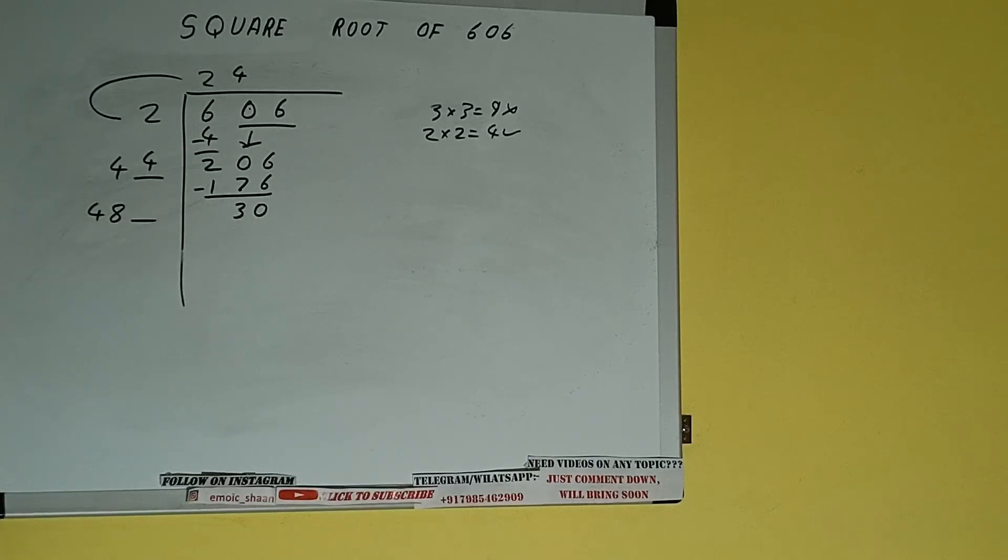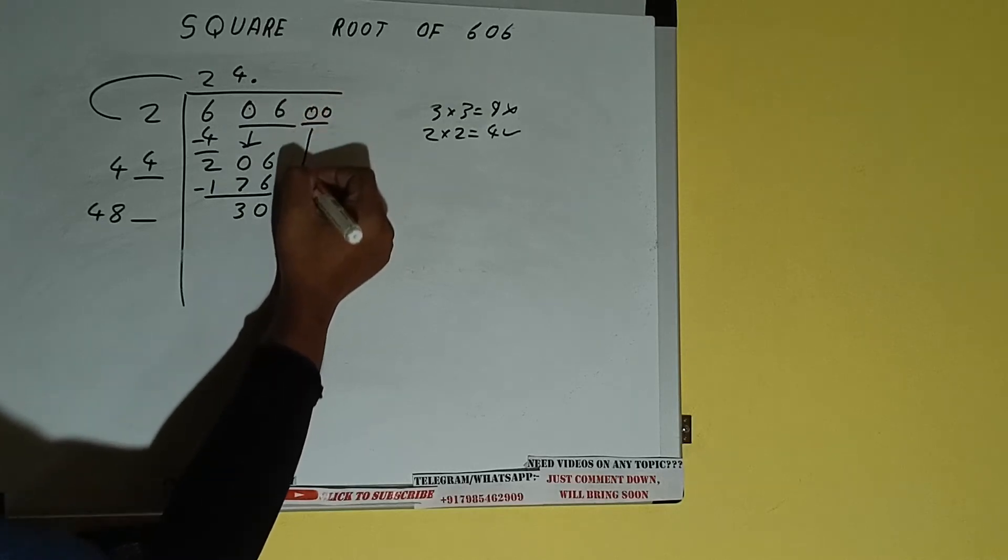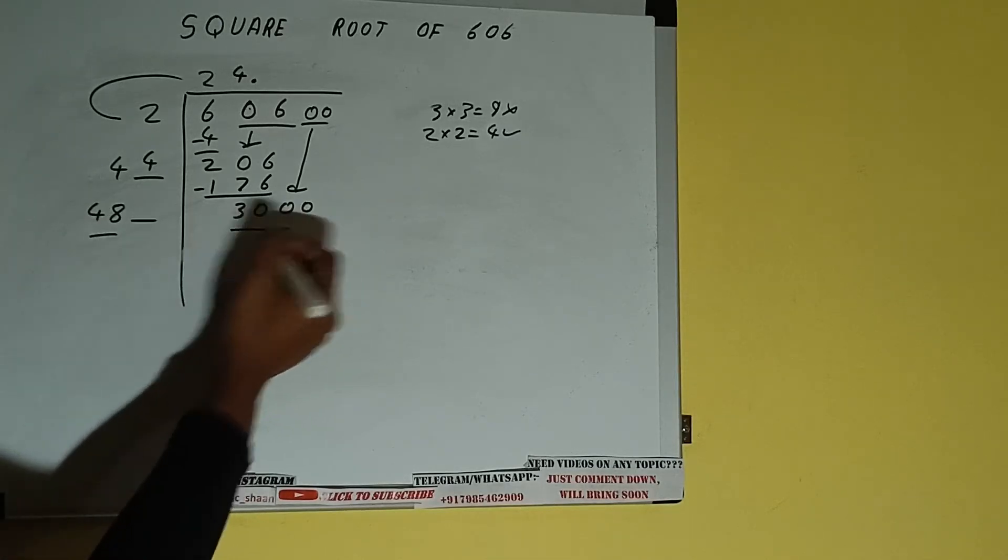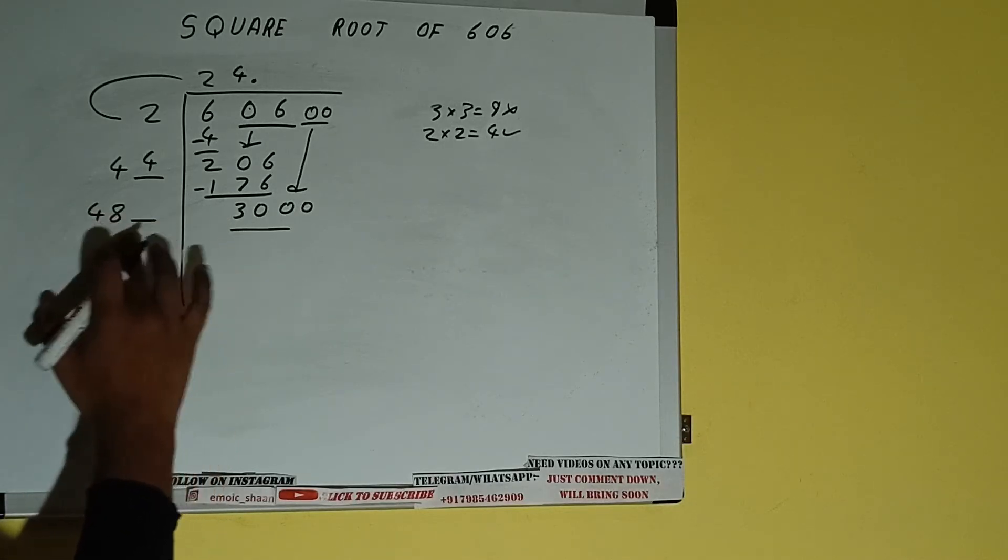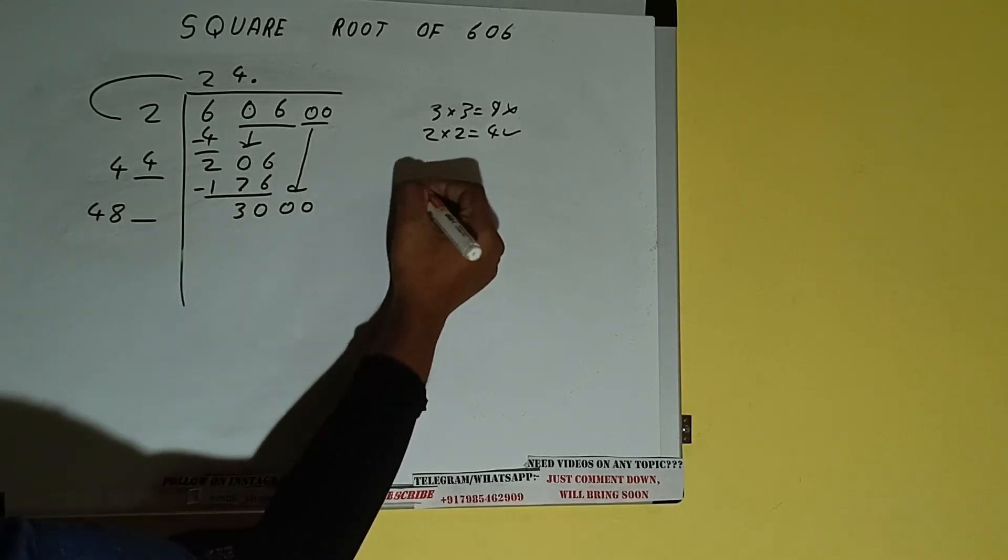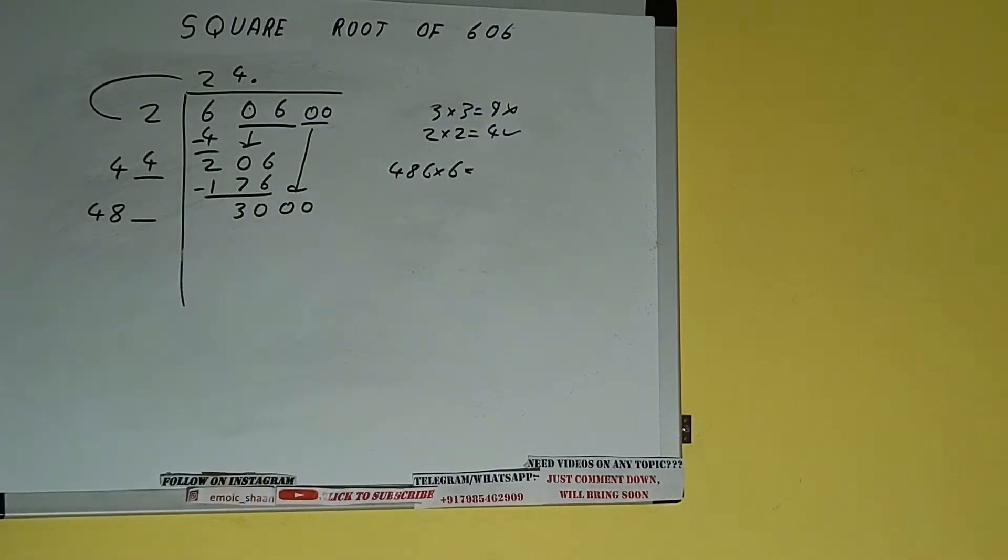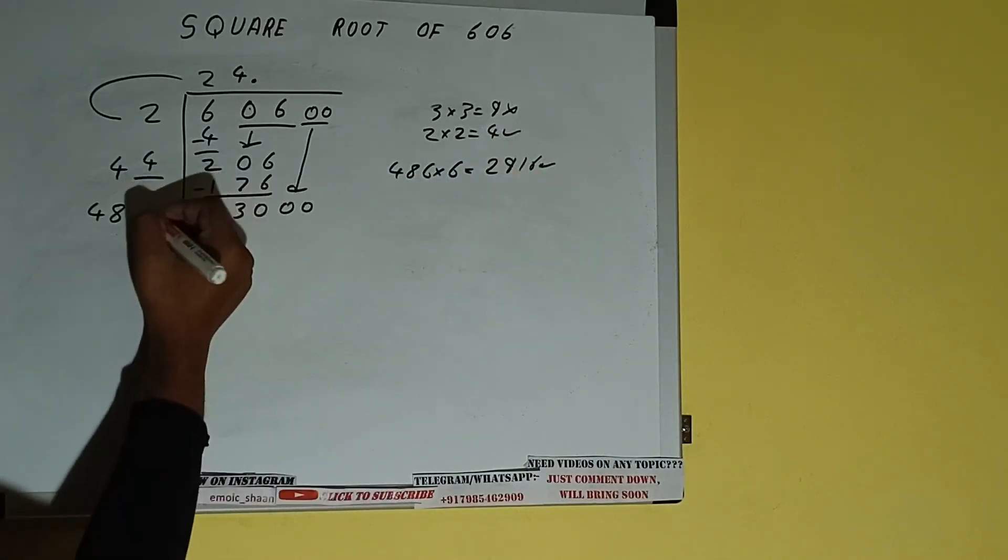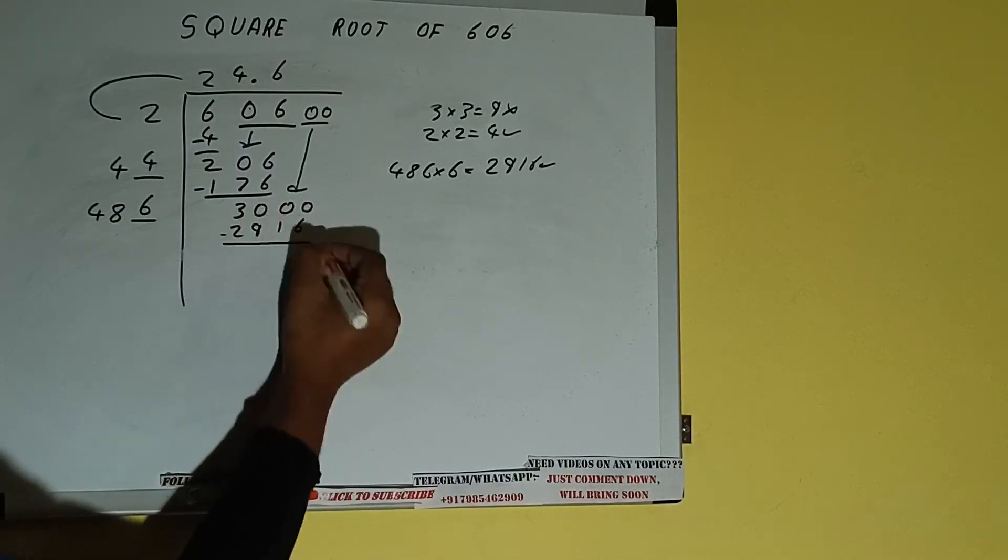This number we need to make it big, but we don't have more pairs, so I'll put a decimal. Once I put a decimal, we can bring a pair of zeros down and it will be 3000. Now compare this 48 and 300. So 48 six times is 288, so we can try 6 times. 486 into 6 we can try, and we'll be having 2916, which is good to take. So 6 here and 6 here. 2916 subtract.